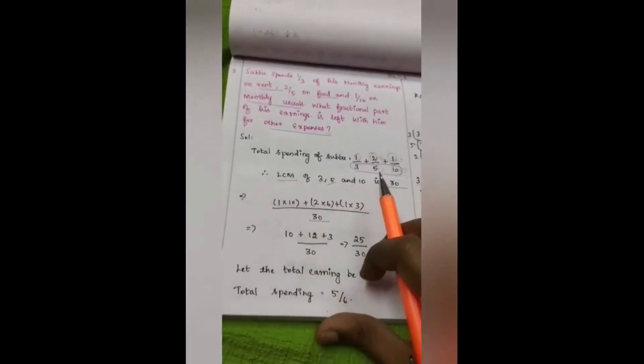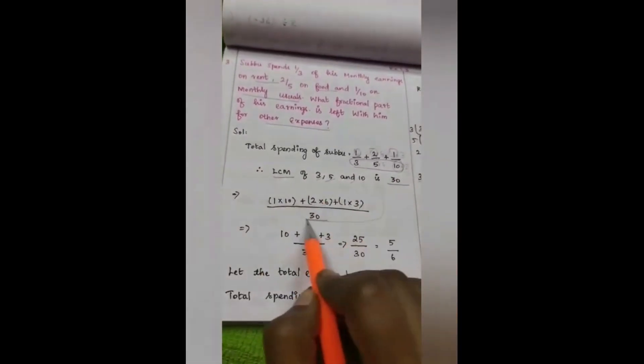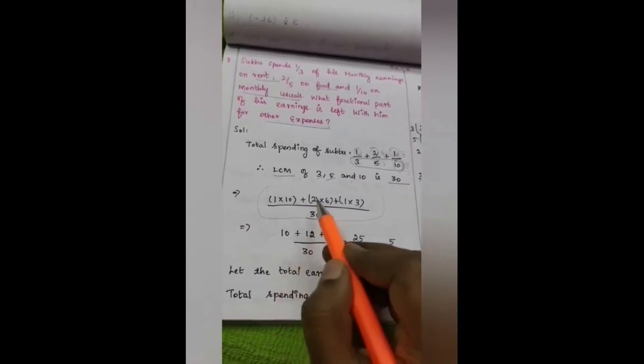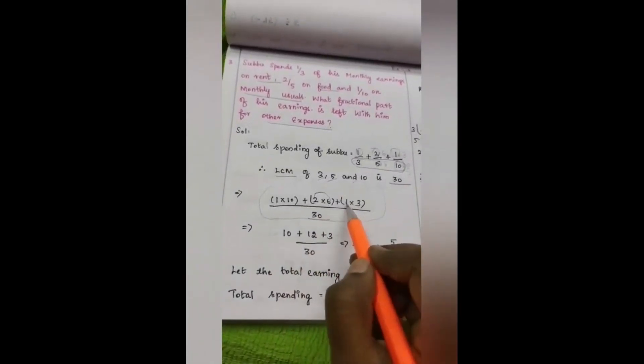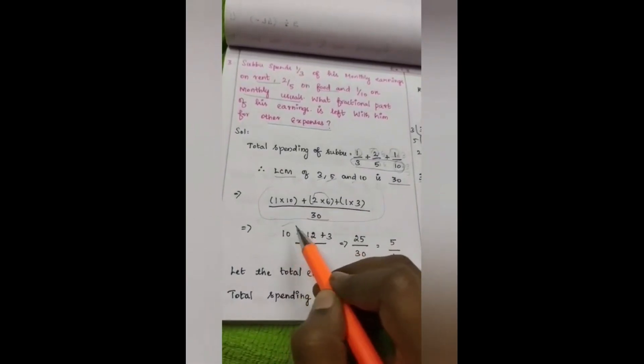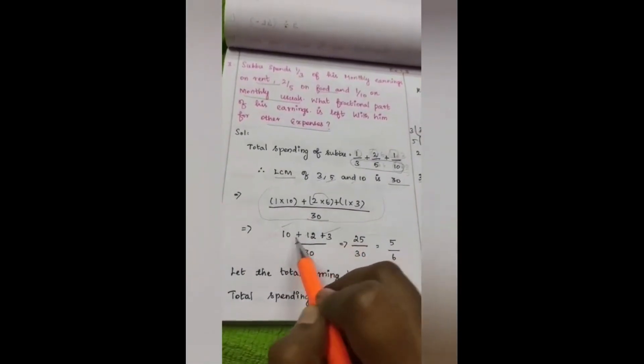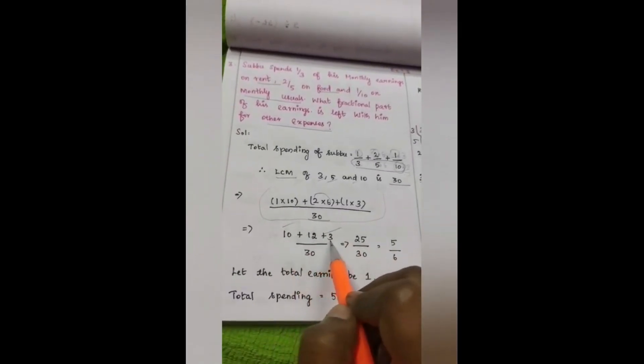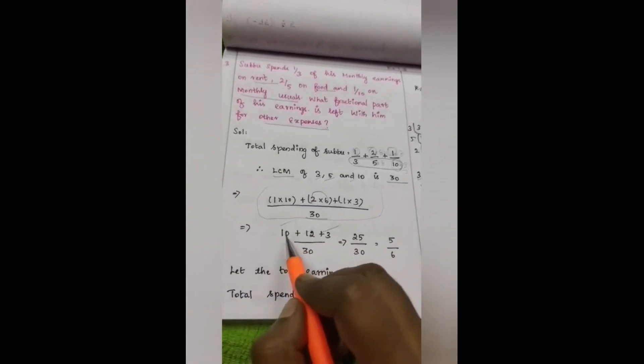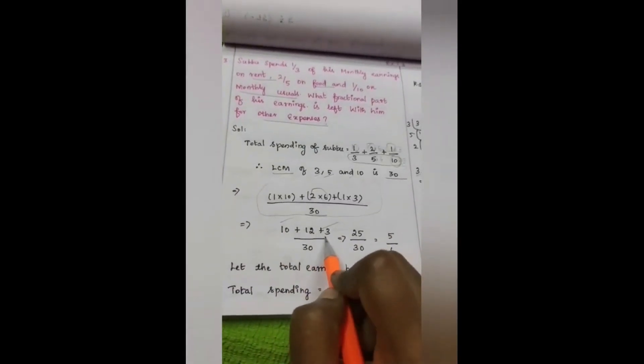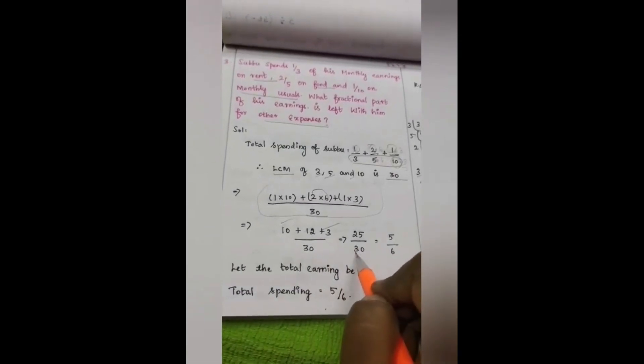After writing like this, this whole term becomes 1 into 10 is 10, plus 2 into 6 is 12, plus 1 into 3 is 3, divided by 30. See here we have integers with same sign, so no need to worry. Just simply add it together. 10 plus 12 is 22, 22 plus 3 is 25 divided by 30.